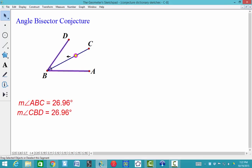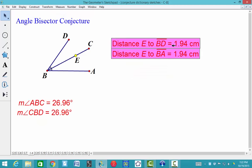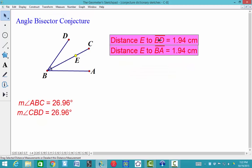Simply highlight the point and the sides, and we can just measure the distances. You can see here that the distance from point E to segment BD and the distance from E to segment BA is going to be congruent, it's going to be equal.